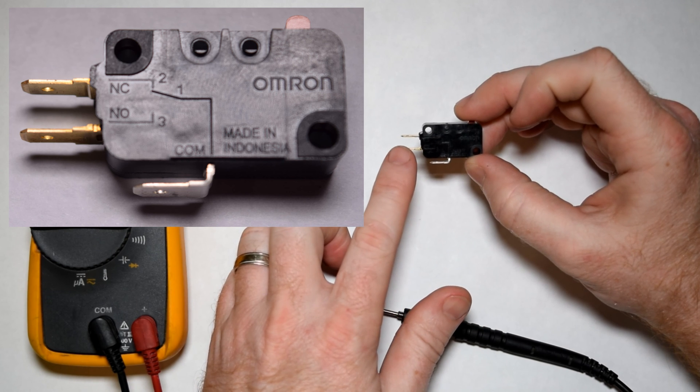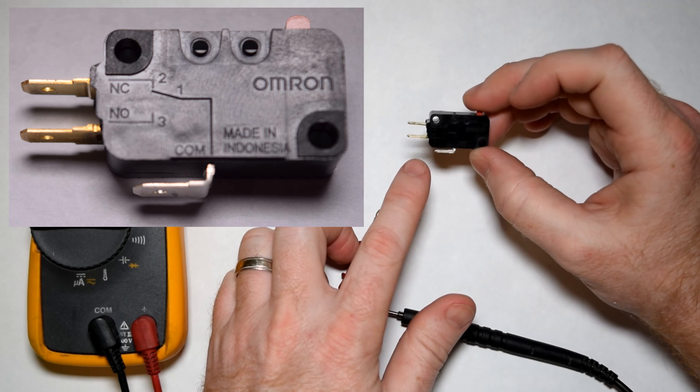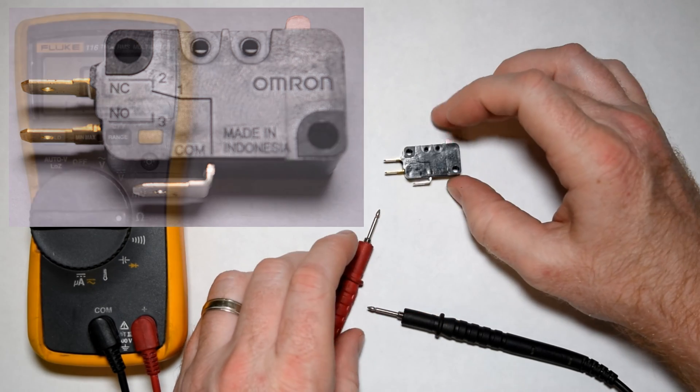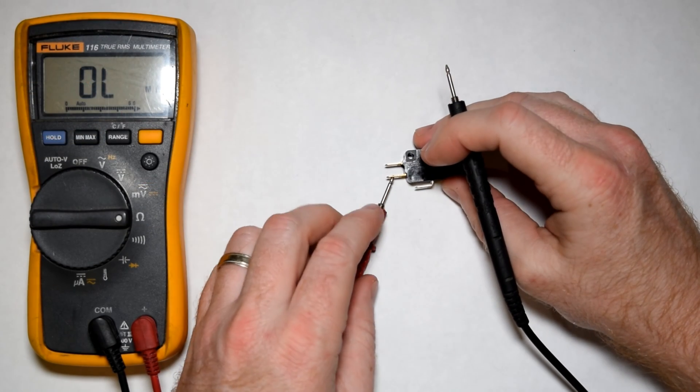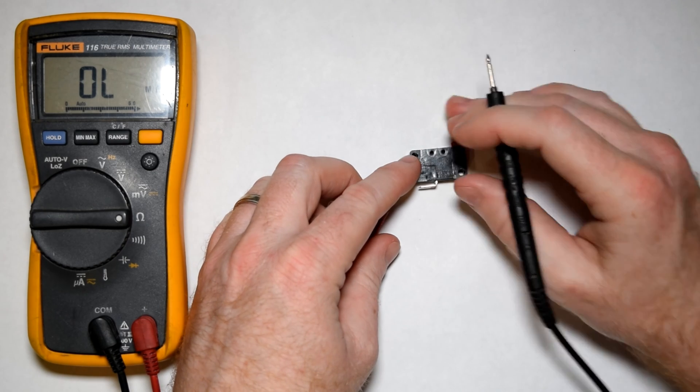NO, which is normally open. So this should be a normally open circuit, just with this resting state. Then you'll see NC, which is normally closed. For our test today, we're going to do that one.